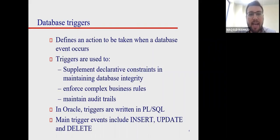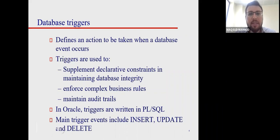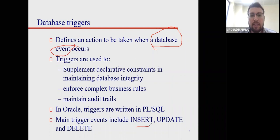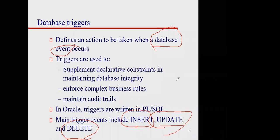Database triggers are defined as actions to be taken when database events occur. Triggers are based on events — specifically database events. The most important database events are INSERT, UPDATE, and DELETE. These are the core events in the life of a database, and triggers are the actions that occur when these events take place.